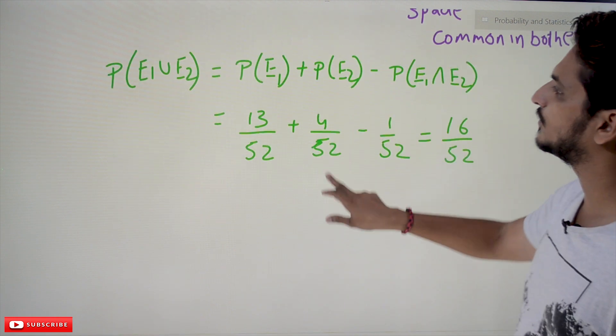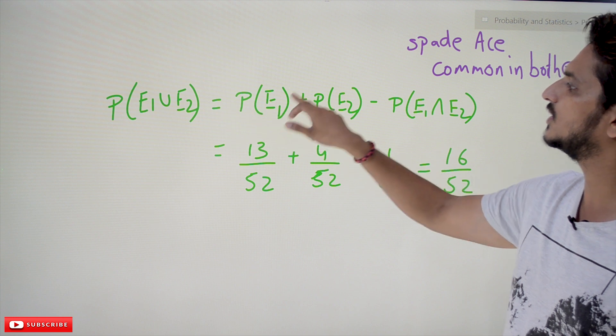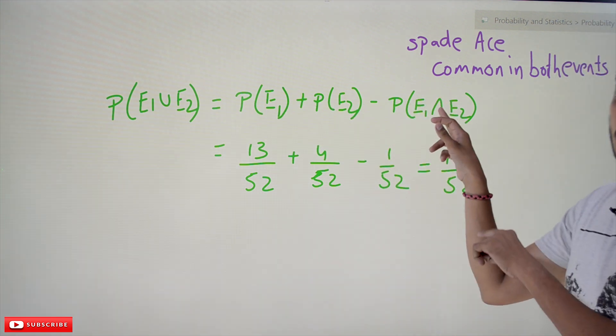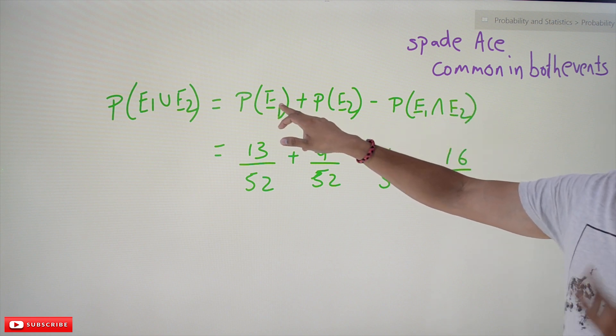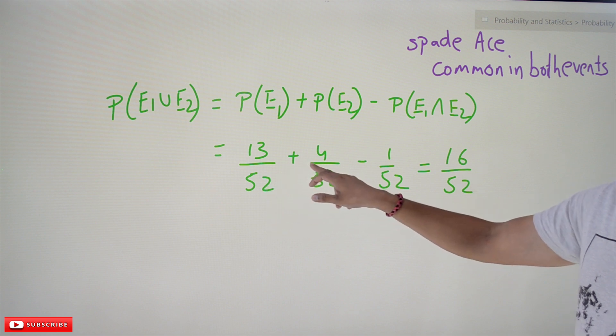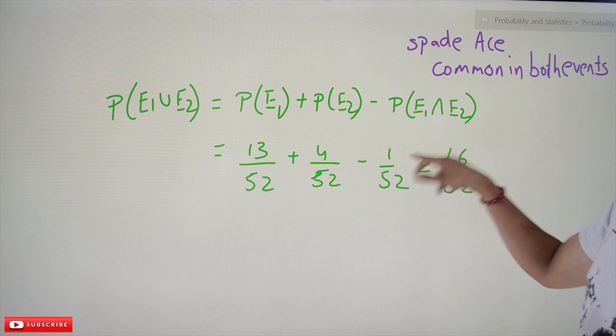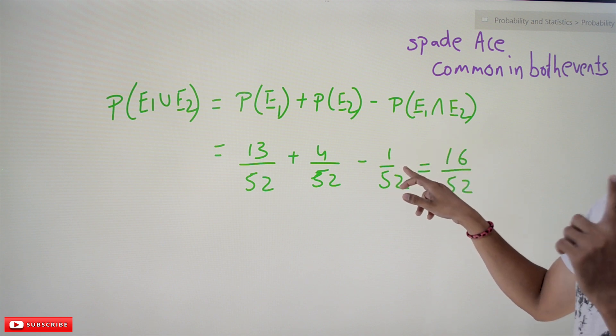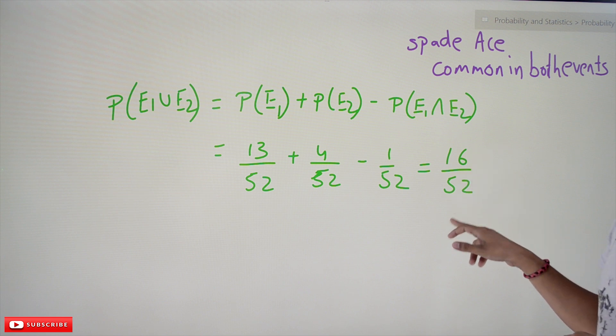What's the equation we discussed in our previous class? Probability of E1 union E2 equals probability of E1 plus probability of E2 minus probability of E1 intersection E2. E1 means you can pick any spade card, so 13 cards, 13 by 52, plus any ace card, 4 by 52, minus the intersection 1 by 52. One ace card is common to both. That equals 16 by 52 total.